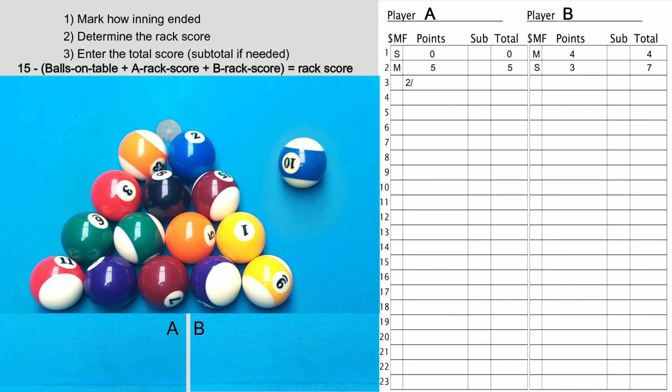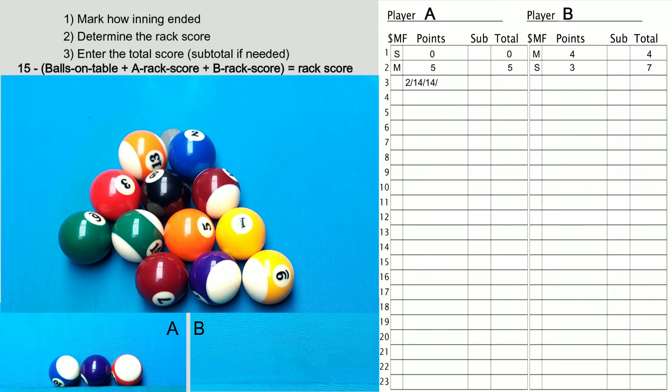We'll revisit that idea in just a moment. But first, let's assume that player A starts channeling John Schmidt and they run two racks in a row. How do we score that? Just write down 14, followed by a slash to indicate the end of the rack. Next, player A makes the break shot, pockets two more balls, and then plays an intentional foul.